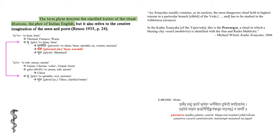As stated in the last slide, the Garma signals to us the imagery of a cryptic soma sacrifice, and such sacrifices are always done where the wild things are. An aranyaka usually contains as its nucleus the most dangerous ritual held in high esteem in a particular branch or shakha of the Veda, and has to be studied in the wilderness, the aranya. In the Katha aranyaka of the Yajurveda, this is the Pravargya, a ritual in which a blazing clay vessel called Mahavira is identified with the sun and Rudra Mahavira.